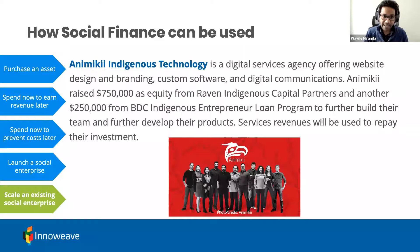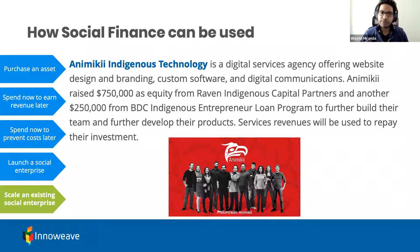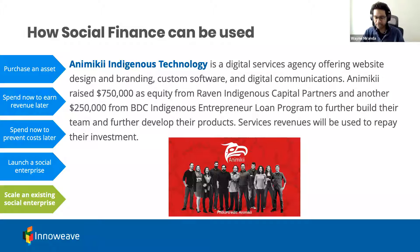Another example is scaling an existing social enterprise — Anamiki Indigenous Technology, a digital services agency offering website design, branding, custom software, digital communications, and an Indigenous data sovereignty product. They raised $750,000 in equity investment from Raven Indigenous Capital Partners and $250,000 from the BDC Indigenous Entrepreneur Loan Program. That total of $1 million was used to build out their team and develop products, with service revenues used to repay the investment over time.